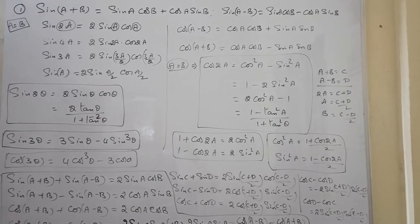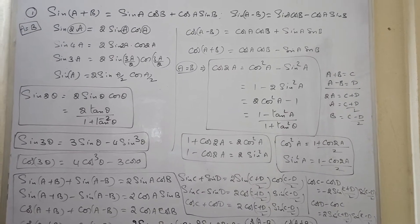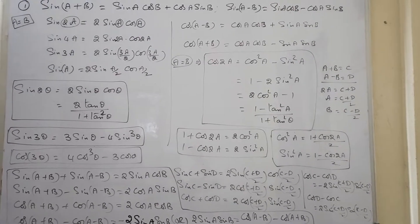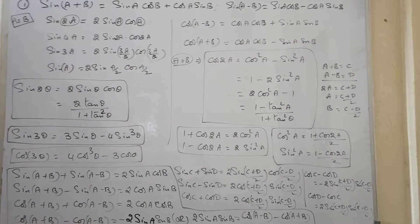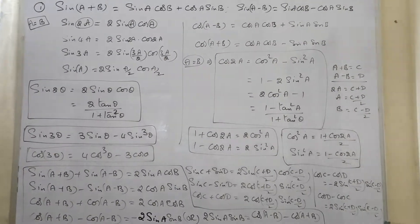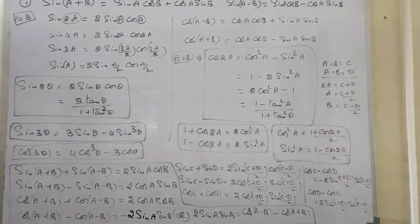Cos 2a has four different types of formulas, and sine 3 theta, cos 3 theta formulas are also there. Two more important formulas for calculus: one plus cos 2a and one minus cos 2a.